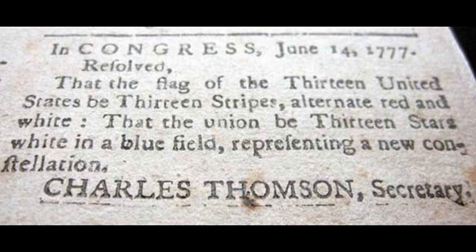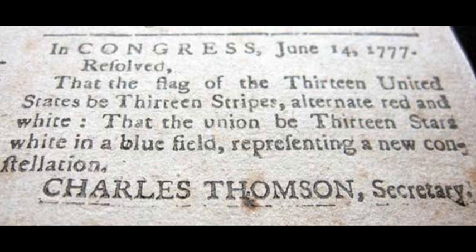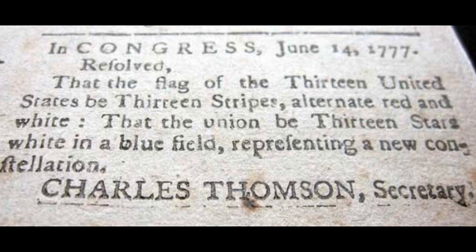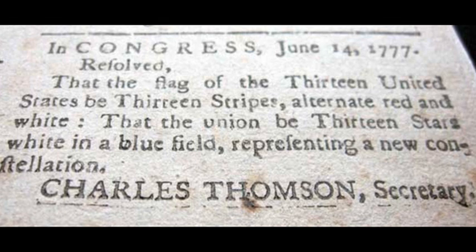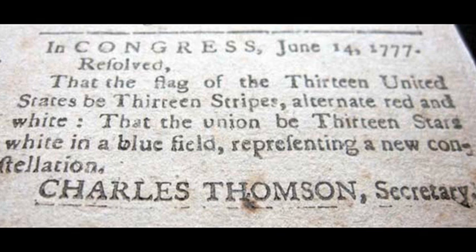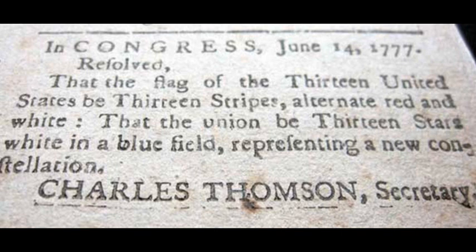The Flag Resolution stated some general parameters for the appearance of the American flag. Specifically, it said that there should be 13 alternate red and white stripes, and a group of white stars against a blue background. However, it didn't specify a precise arrangement of stripes and stars. Consequently, a range of different designs, all of which met the very broad definition, were produced.